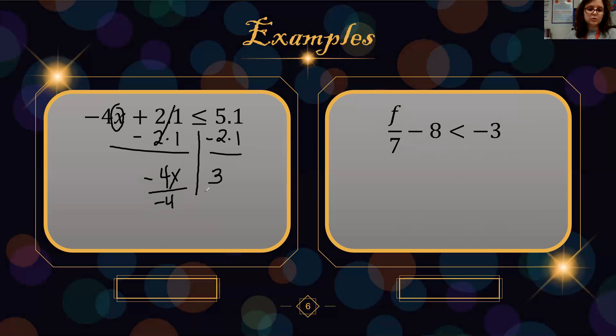We undo multiplication with division. So we have x on one side, negative 3 fourths on the other. We did divide by a negative, so our less than or equal to will flip over.